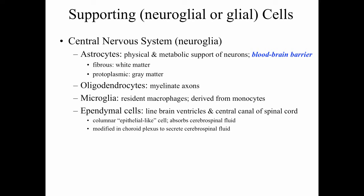Oligodendrocytes are a special type of glial cell that myelinate axons within the central nervous system. The microglial cells are resident macrophages within the central nervous system. These cells are actually derived from monocytes. Ependymal cells line the brain ventricles and line the central canal of the spinal cord.